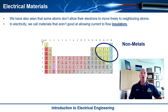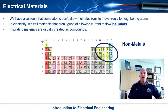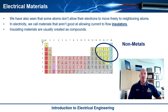An insulator is something that doesn't allow current to flow — it resists the flow of electricity. Conductors tend to be made of just pure elements: gold is just gold, aluminum is just aluminum, copper is just copper. But when you look at insulators, they tend to be made of compounds. We don't necessarily have a specific element that we use directly as an insulator.